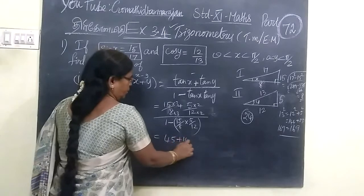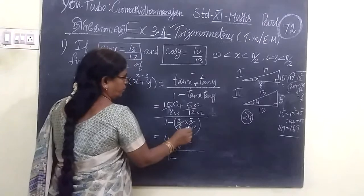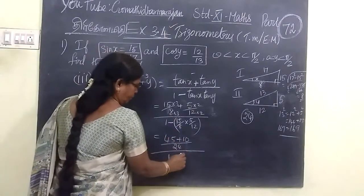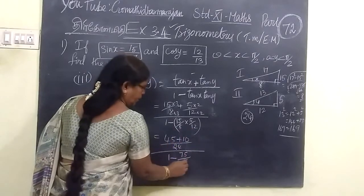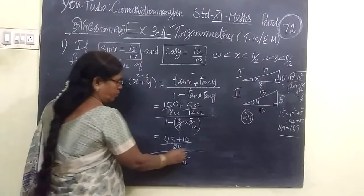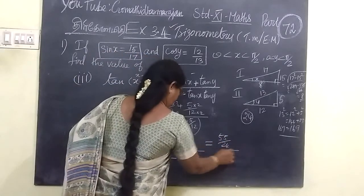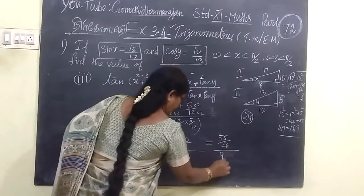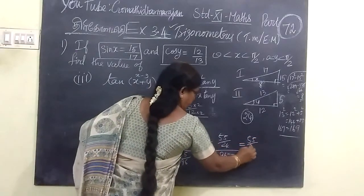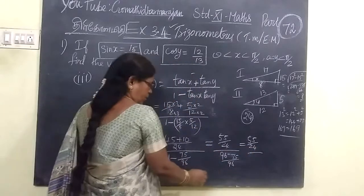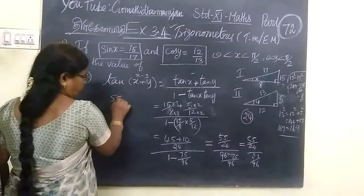45 plus 10 by 24, then the whole by 1 minus 75 by 96. So if you cross multiply, you are getting 55 by 24, and 96 minus 75 is 21.